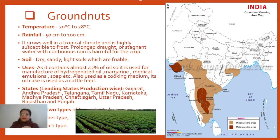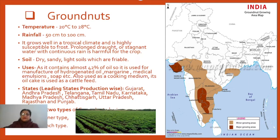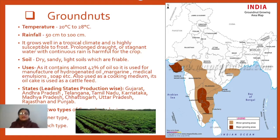Both extreme conditions are harmful for groundnut — a long drought condition with no rainfall for a long time is harmful, and similarly if heavy rainfall occurs and water stays in the field for a long time that also harms the crop. So we must choose a season where rainfall is neither too heavy nor completely absent. This is the climatic condition required for groundnut.